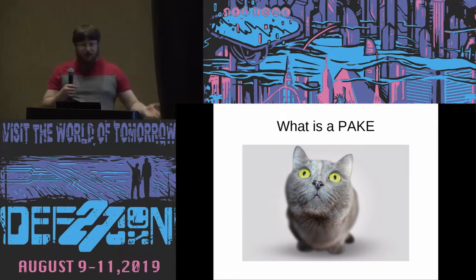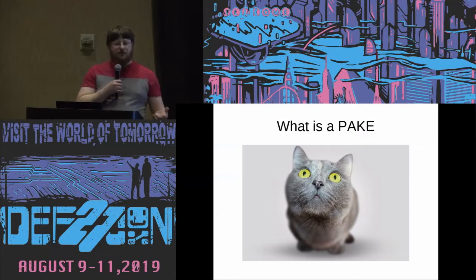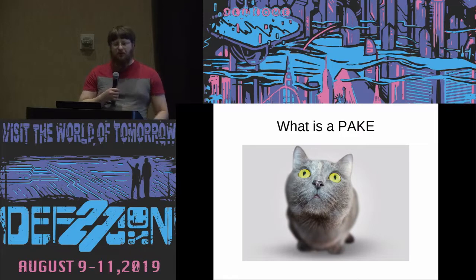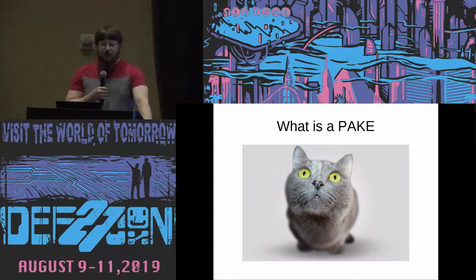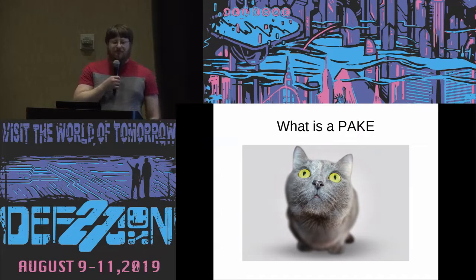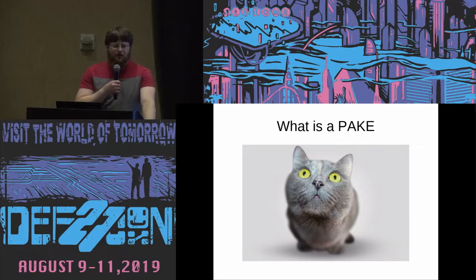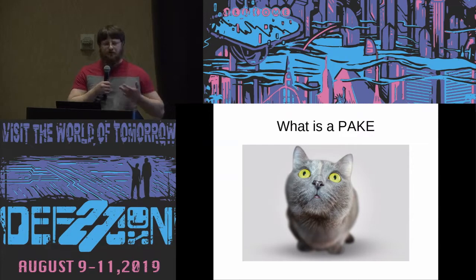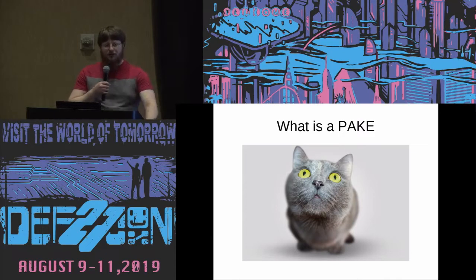There are two different types of PAKEs: balanced and unbalanced, sometimes called symmetric and asymmetric or augmented. A balanced PAKE is peer-to-peer — two people that have a shared low-entropy key, such as a short password or something pre-arranged. You can do a key exchange and it can be secure.